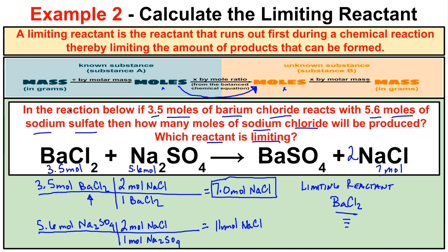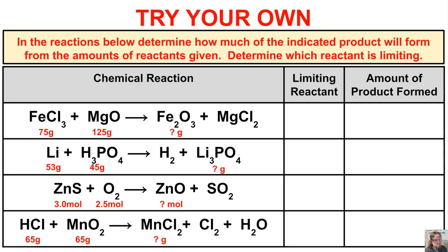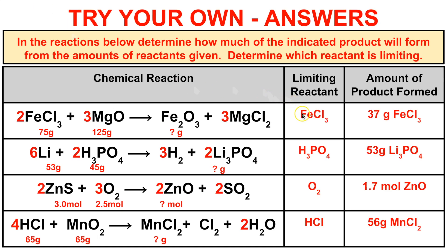Those were two examples of calculating limiting reactants. I recommend pausing the video and trying the practice problems on your own: 75 grams of iron(III) chloride reacts with 125 grams of magnesium oxide — how many grams of iron(III) oxide will be produced, and which reactant is limiting? The answers are coming up. If you found this helpful, click the subscribe button and feel free to leave comments or questions below.